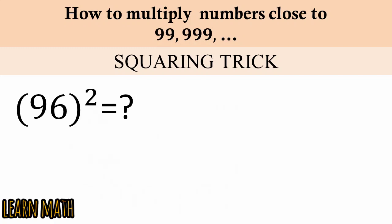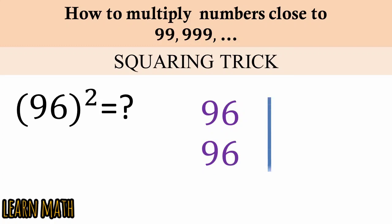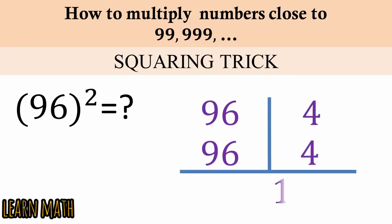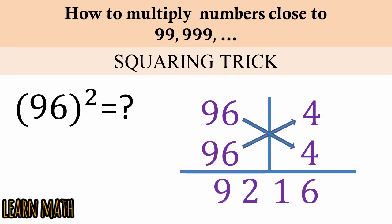How to use this rule for squaring? For 96 squared: 100 minus 96 is 4, then 4 into 4 is 16, and 96 minus 4 is 92 — so 9216 is the answer. You can use this trick for squaring as well.